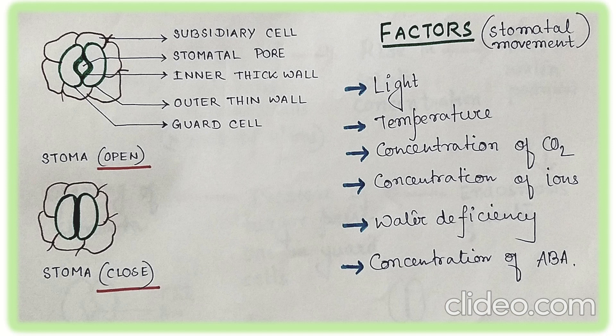Stomata are made up of two guard cells which are surrounded by subsidiary cells. These two guard cells subtend a pore at their center. When these guard cells are turgid, we say that the stomata have opened.